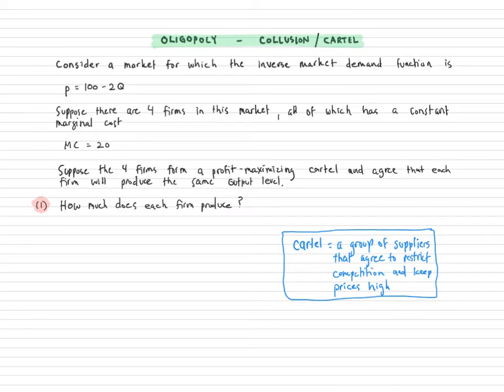All right, so the premise is suppose the four firms form a profit maximizing cartel and they all agree that each firm will produce exactly the same output level. So whatever the profit maximizing output level is they will just split it in four shares and each produce one of those shares. So the big question is how much does each firm produce?